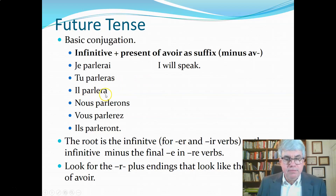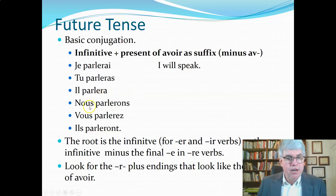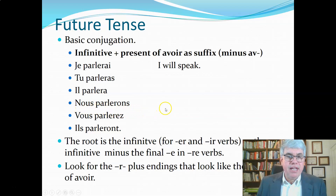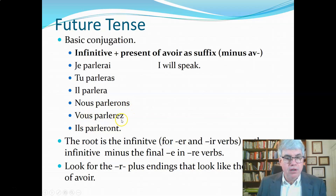'Il parlera' — that's the third person singular of avoir. 'Nous parlerons' — it's 'nous avons', but we drop off the 'av' and just put the '-ons' there. 'Vous parlerez' — same thing.